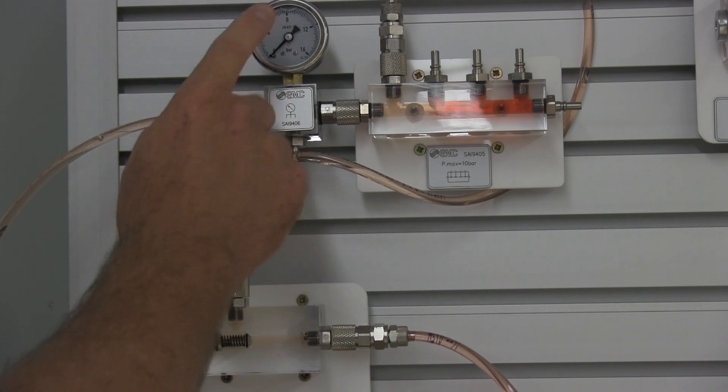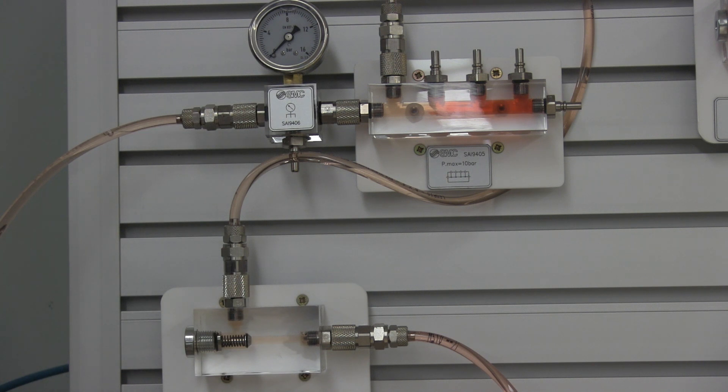We can tell that because we have max pressure. Remember, if we have max pressure then we have no flow. If we have less than max pressure, we have flow somewhere in the system.